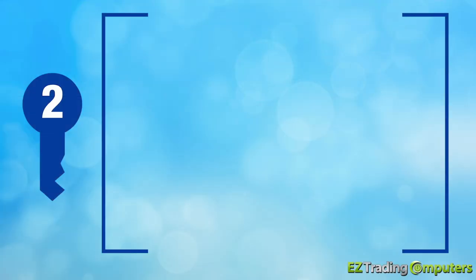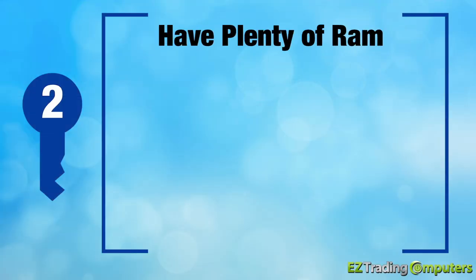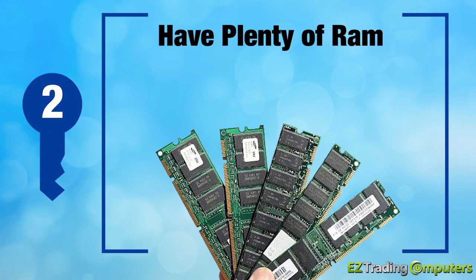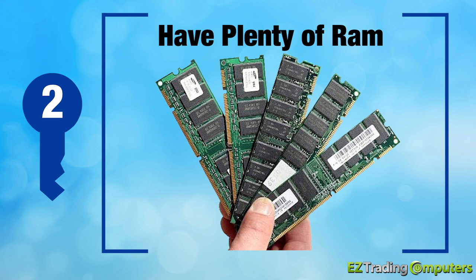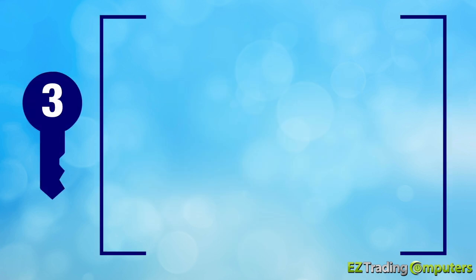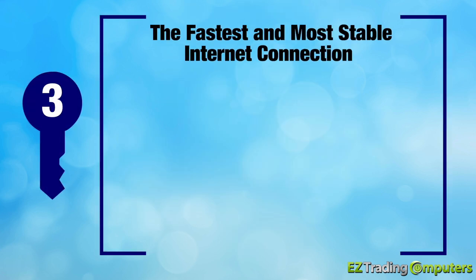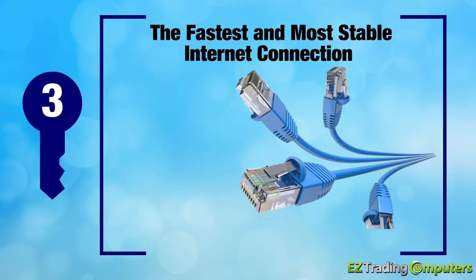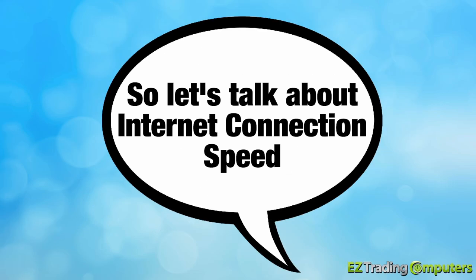The second key to optimal speed is having plenty of RAM — that is random access memory. At the very least, you want 16 gigabytes. The third key element is having the fastest and most stable internet connection that's available in your area.